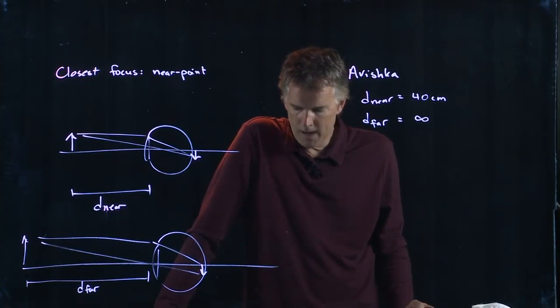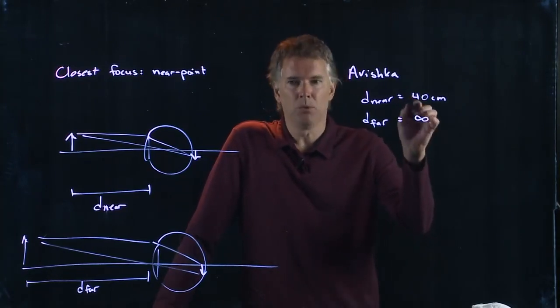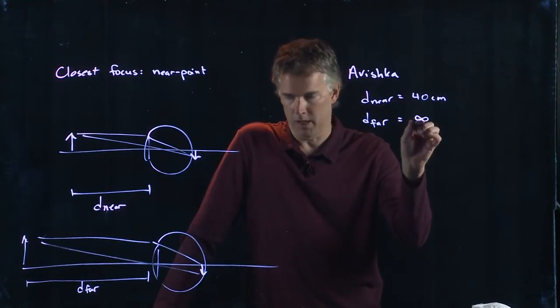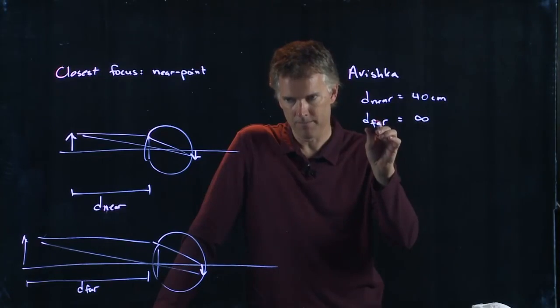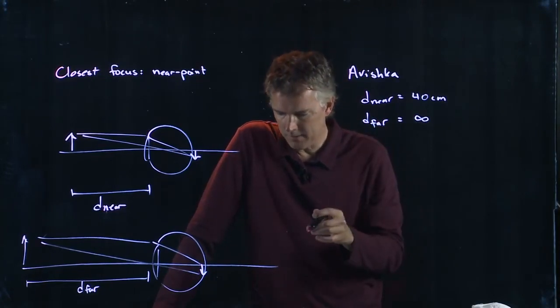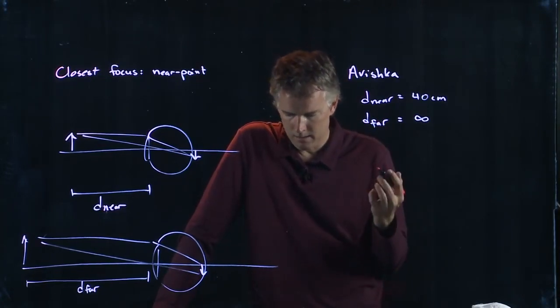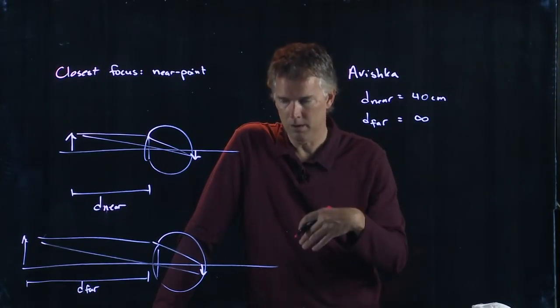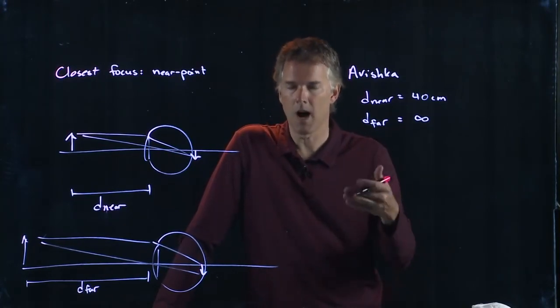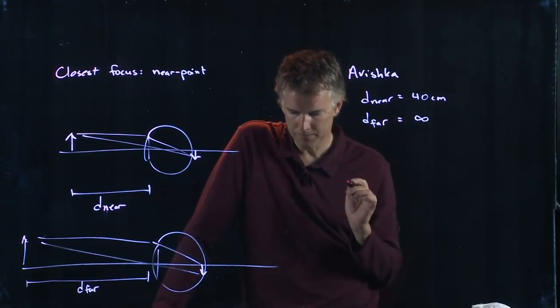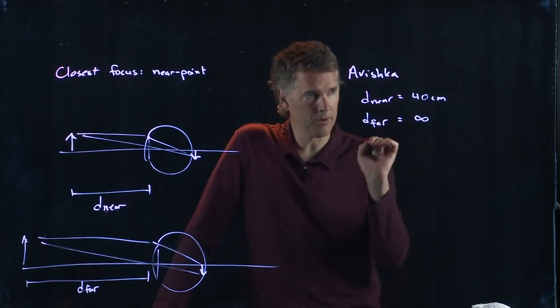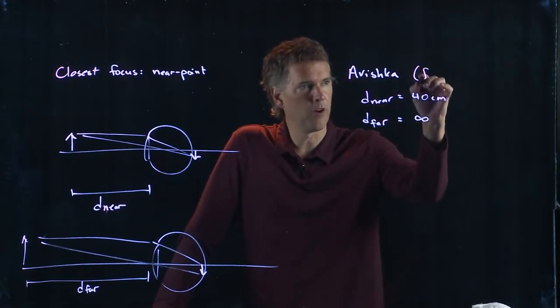So, when you consider people that are nearsighted, they are not able to see out to infinity. If they can see out to infinity, then they are farsighted. Likewise, if they can't see anything close, then they are farsighted, not nearsighted, where the close point is about 25 centimeters. So this person right here is farsighted.